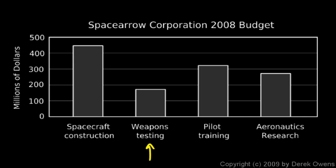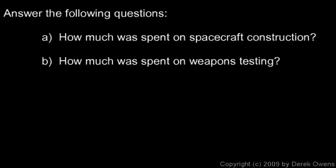And how much was spent on weapons testing? Just based on the graph, it's clearly less than 200 and more than 150 — it's more than halfway between the 100 and 200 mark. Just from looking, I'd guess that's about 180 million. So these are the two numbers we're looking for: about 450 million and about 180 million. How much was spent on spacecraft construction? About 450 million dollars. How much was spent on weapons testing? About 180 million dollars.